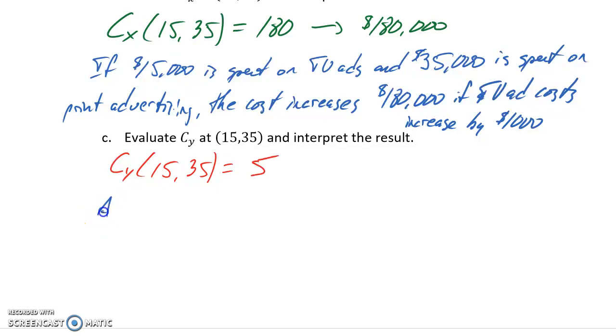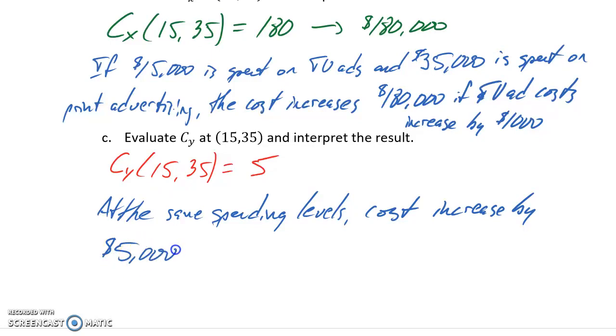This tells us that at the same spending levels, our costs increase by $5,000 if print advertising increases by one unit, which in this case would be $1,000.